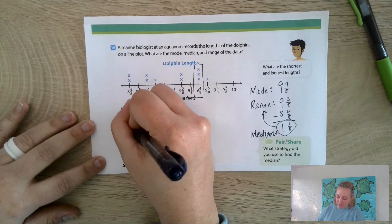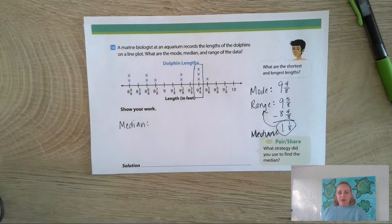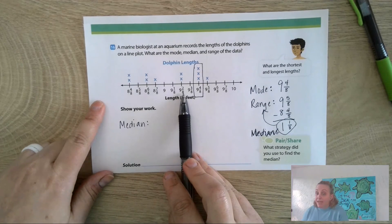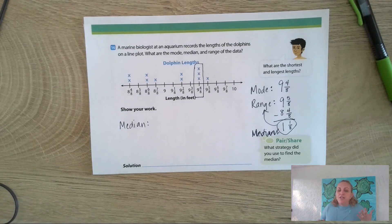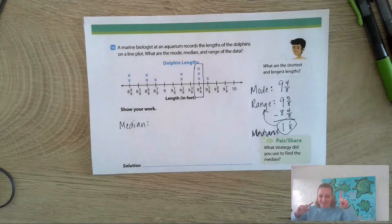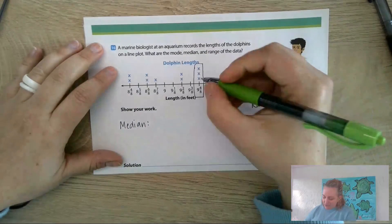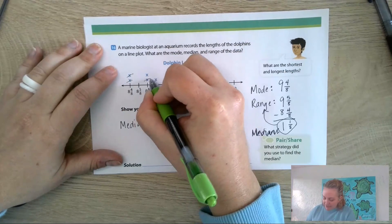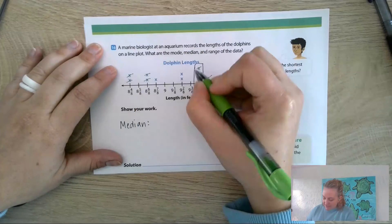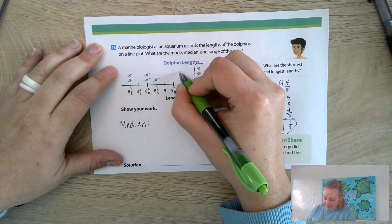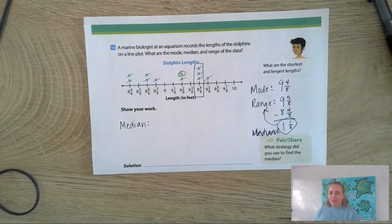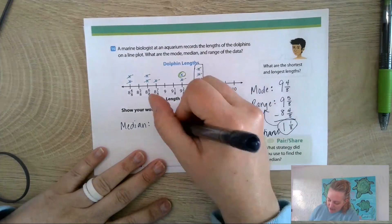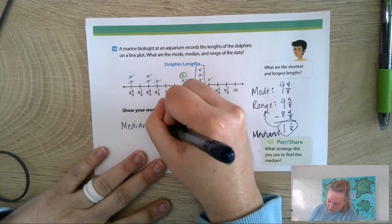Let's write the word median over here. Remember, the median is not the middle number in the line plot, which looks like it would be right around here. It might actually end up being that, but it might not. So we want to make sure by doing our crossing off biggest and smallest. Biggest, smallest, biggest, smallest, biggest, smallest, biggest, smallest, biggest, smallest. Oh, it did end up actually being right there where we thought it might, but that just was because that's where it happened to be this time. In this case, the median is 9 and 2/8.